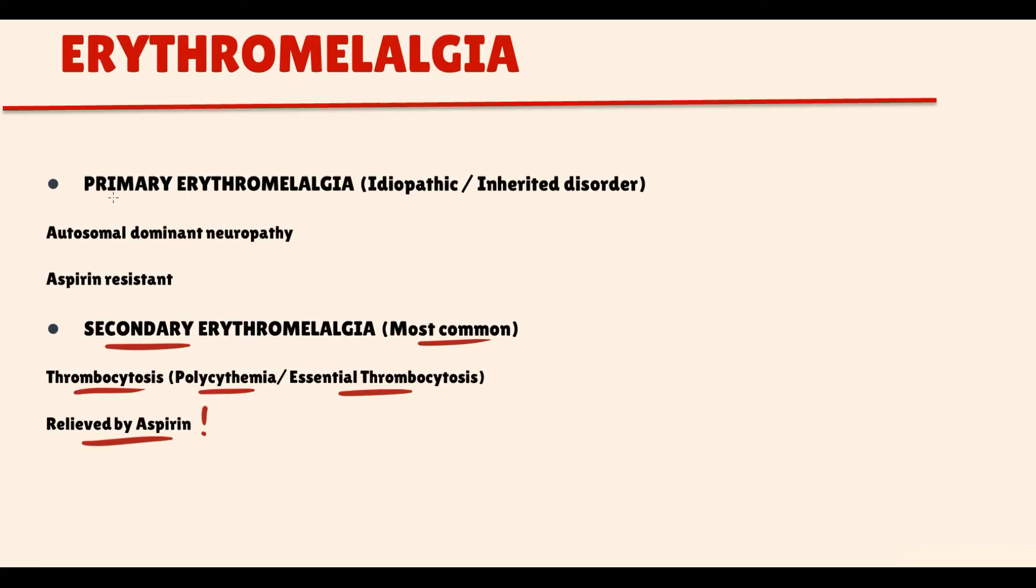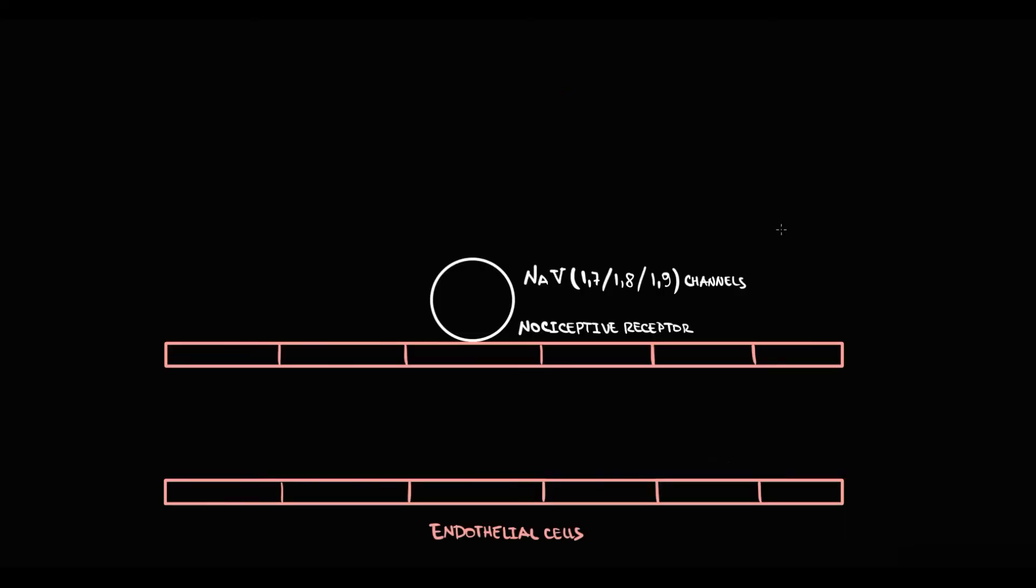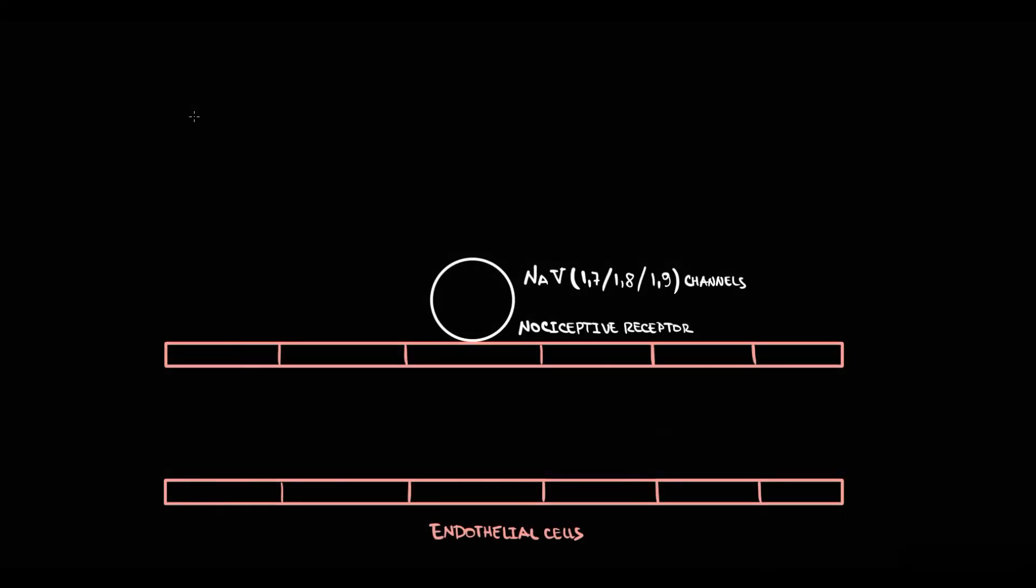Primary erythromelalgia is an idiopathic or inherited disorder, also known as autosomal dominant neuropathy or aspirin-resistant erythromelalgia of unknown origin. Guess what, here aspirin does not help. To explain why, we have to know the pathogenesis. The problem is that in primary erythromelalgia, due to a mutation, the nociceptive receptors become extremely sensitive.